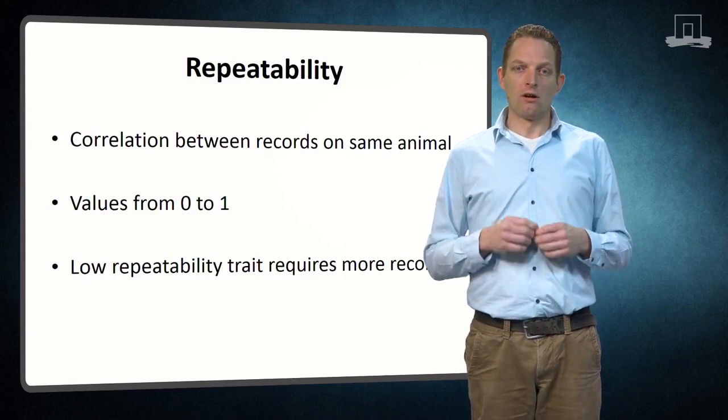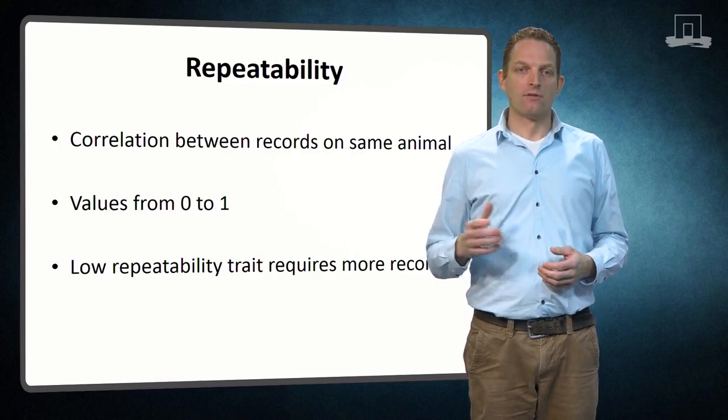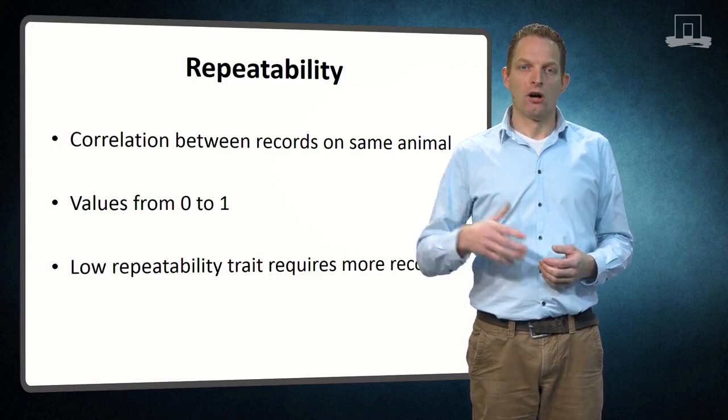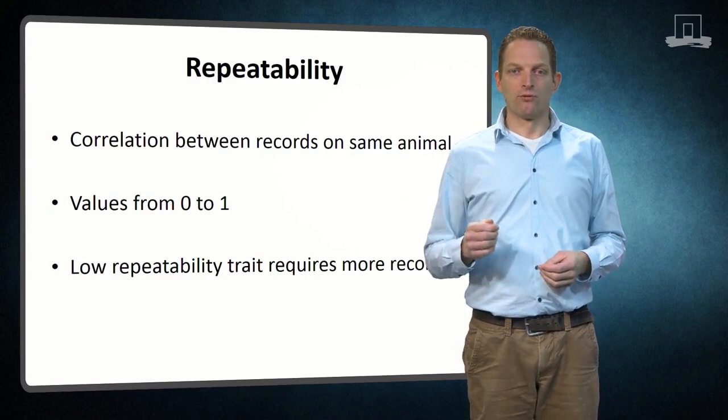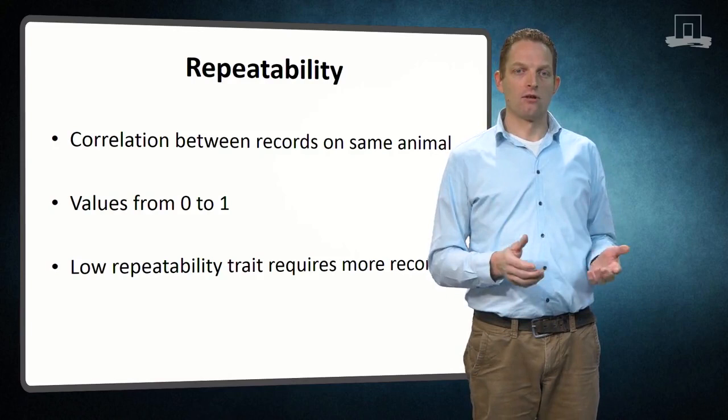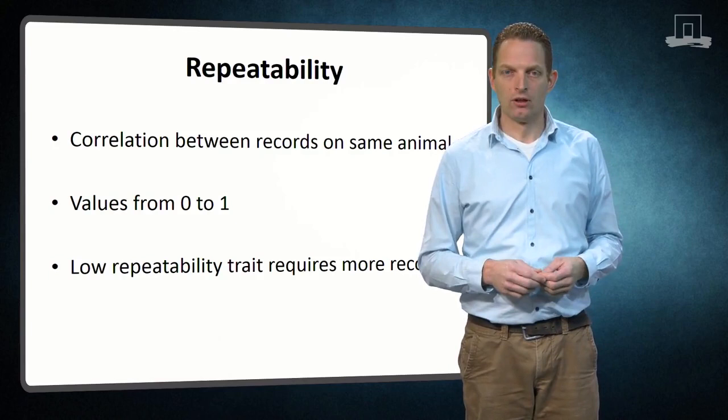Some traits are recorded repeatedly. Repeated records on the same individual may have different values. The extent to which repeated records on the same animals are similar is measured by the repeatability. The repeatability ranges from 0 to 1, where a value of 1 indicates that repeated records have identical values, and therefore obtaining a single record per individual is sufficient.